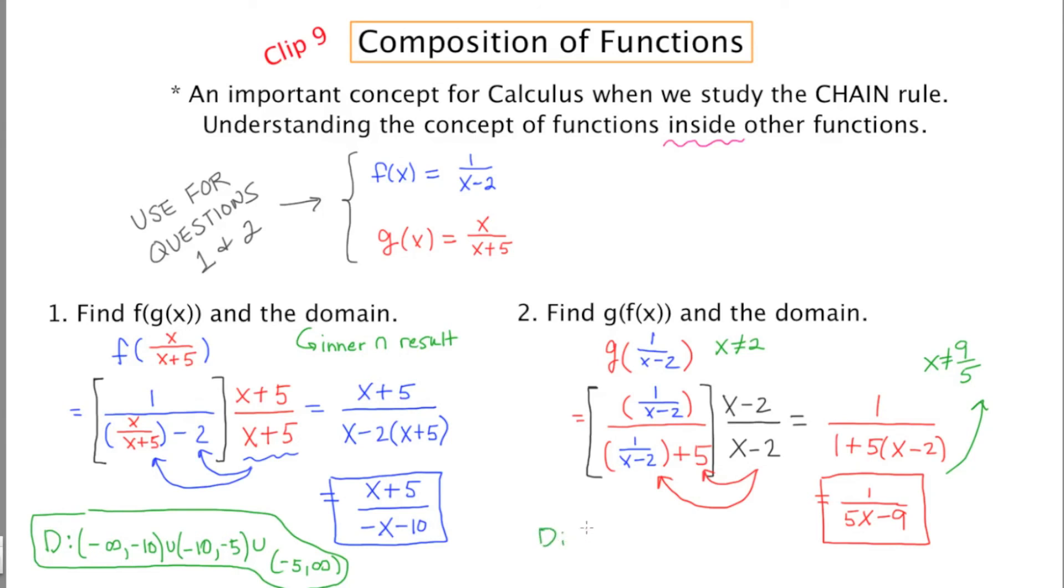So here we go. Hopefully this will fit. Negative infinity to 9 fifths, which is 1 and 4 fifths. Union 9 fifths to 2. Union 2 to infinity. Look at that. We got it all.